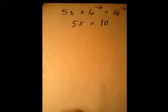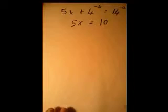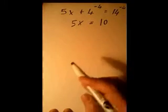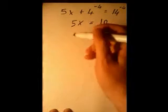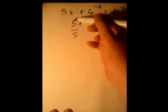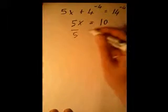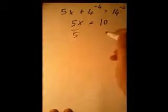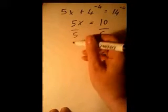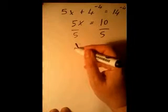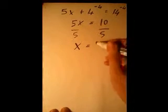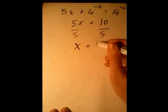We're getting closer to our answer. We just need to get rid of that 5, so we divide by 5 — because 5 divided by 5 is 1, leaving 1x. But if we divide by 5 on the left side, we have to do it on the right side too. That leaves us with X on the left and 10 divided by 5 on the right, which equals 2.